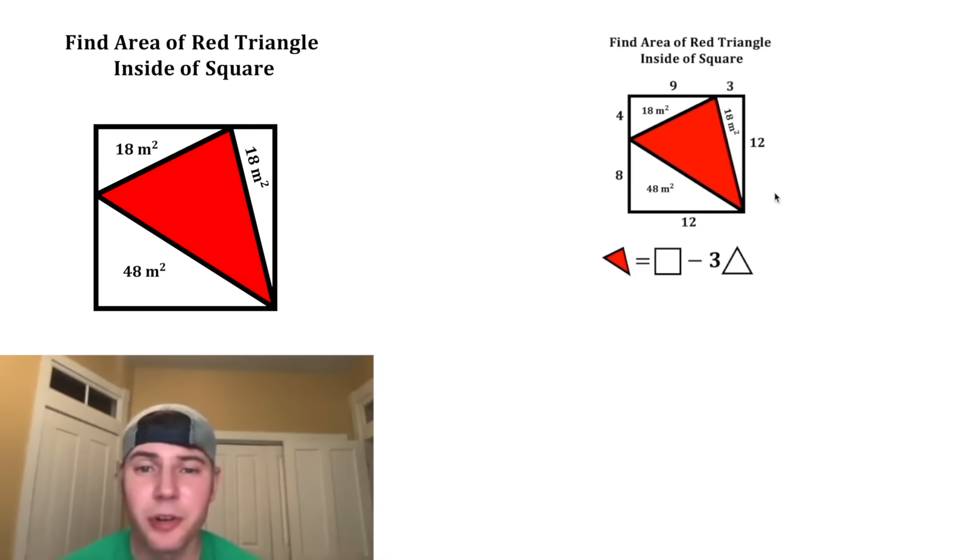Now to find the area of the red triangle, all we need to do is take the square and subtract the three triangles. The area of the square is 12 squared, and then we can just subtract the values of the three triangles. 12 squared is 144, and then all this becomes 60, and we can label it meters squared. That is the answer to our question.